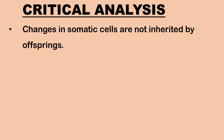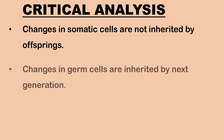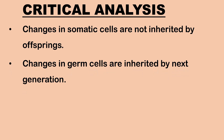Lamarck believed in the inheritance of acquired characters. August Weismann proved that changes which occur in somatic cells are not inherited, while changes which occur in the reproductive cells or germ cells are inherited by the next generation. Weismann cut the tails of white mice for 20 generations and observed that all the offspring developed tails, which means that acquired characters are not inherited.